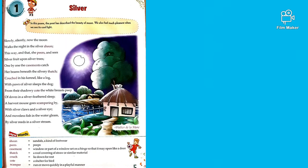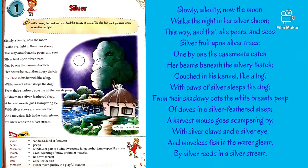Hello children, today we are going to study the first chapter of English literature. This is a poem — a very beautiful poem — 'Silver' by Walter de la Mare. It is a 14-line poem.